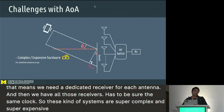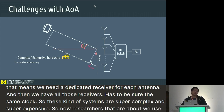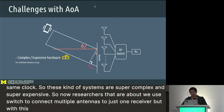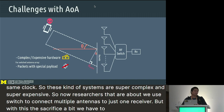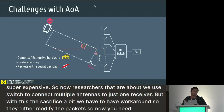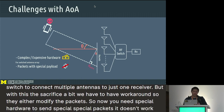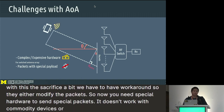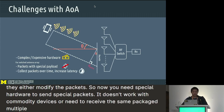Researchers proposed using an RF switch to connect multiple antennas to just one receiver. But with this approach, there are sacrifices and workarounds. Either you modify the packets — which requires special hardware to send special packets and doesn't work with commodity devices — or you need to receive the same packet multiple times, which increases your system's latency.